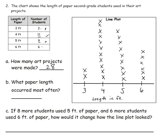And what paper length occurred most often? I can quickly look at my line plot to see, looking for the tower that goes the highest, and that shows me that 4 feet of paper was used most often.